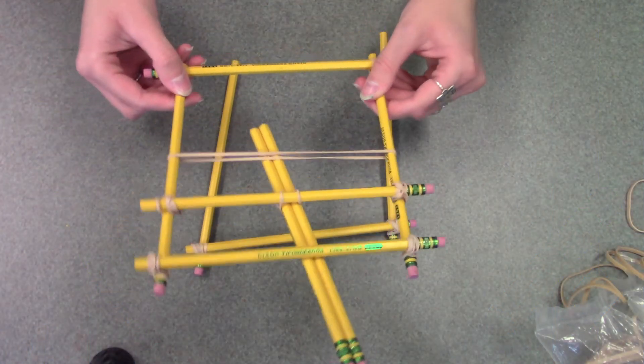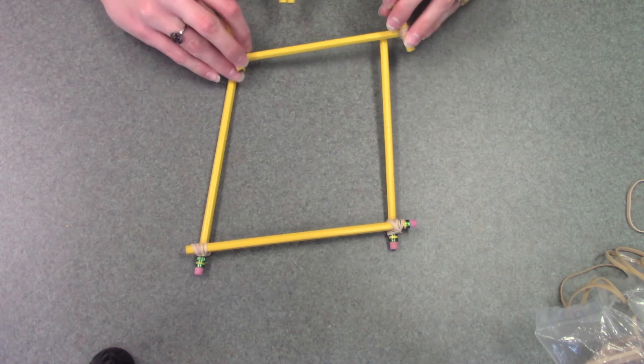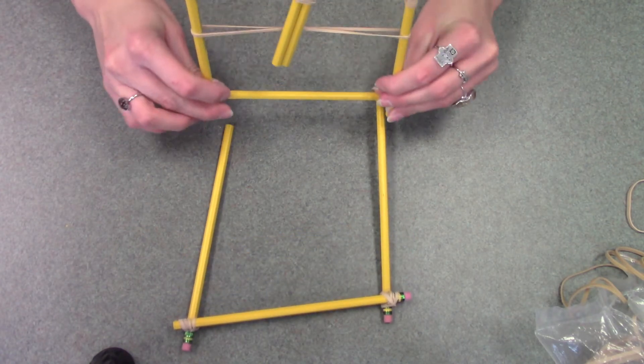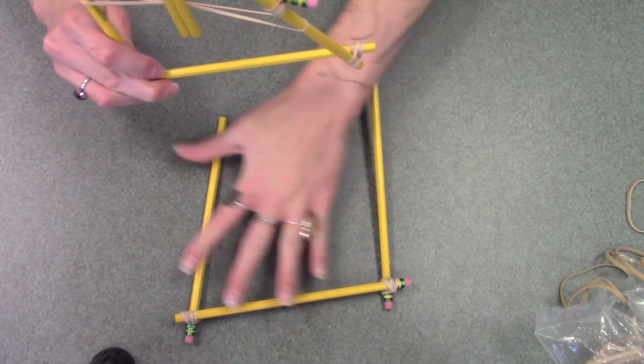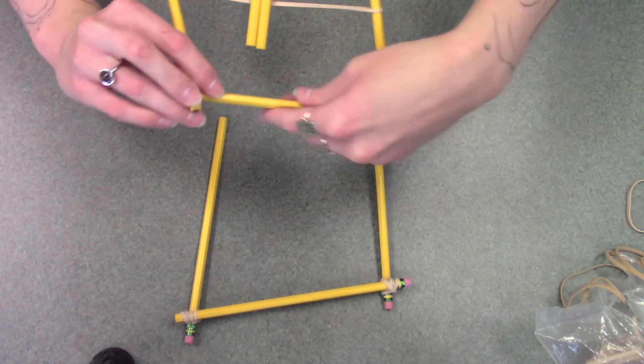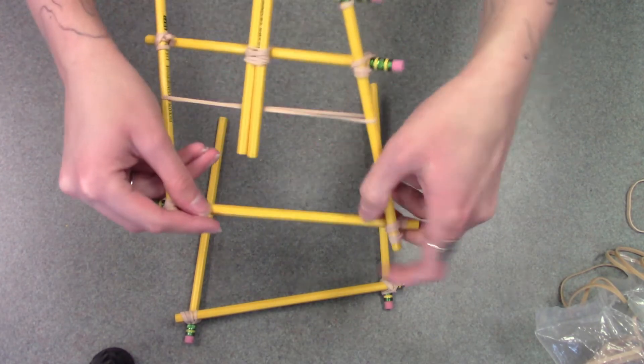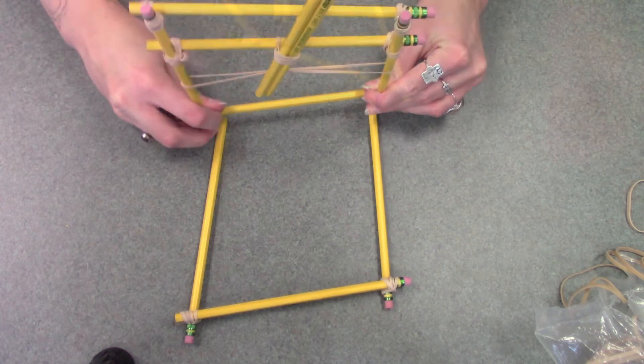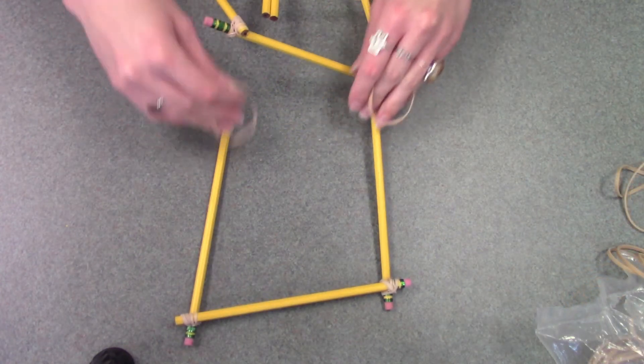Next you're going to take your front piece and attach these two together right here. This is going to act as the base when you attach it to this bottom part right here to make a full square. So with two more rubber bands, you're going to attach these right here.